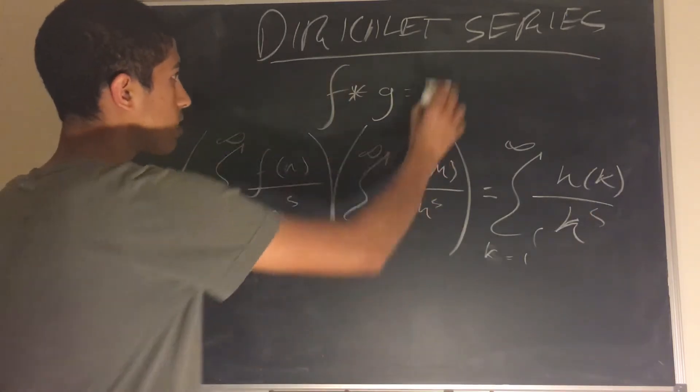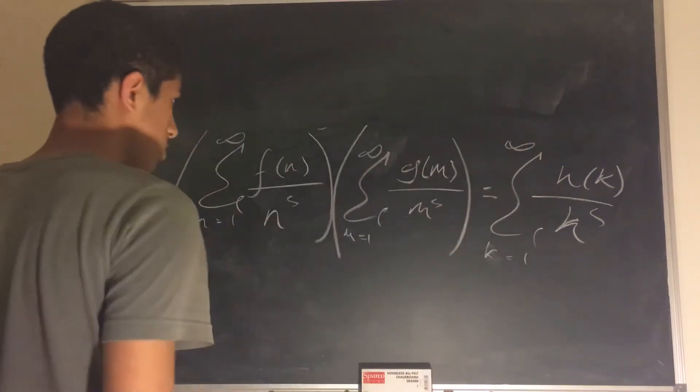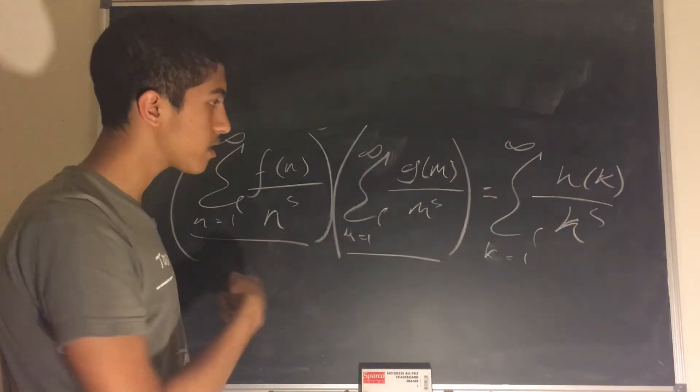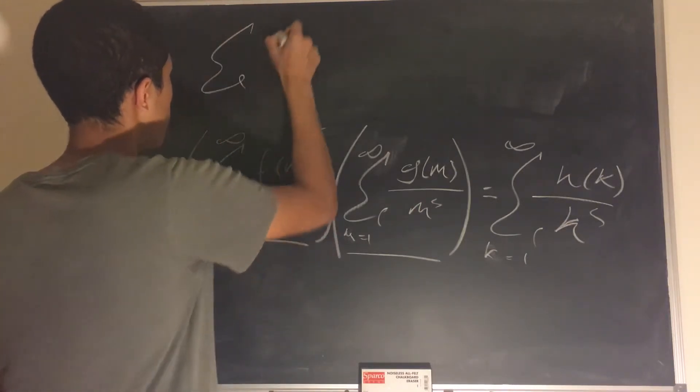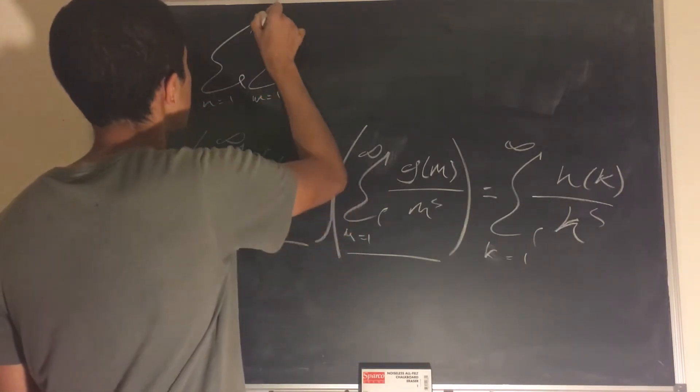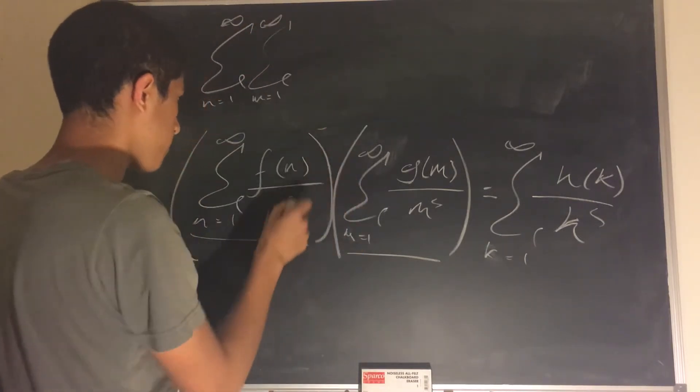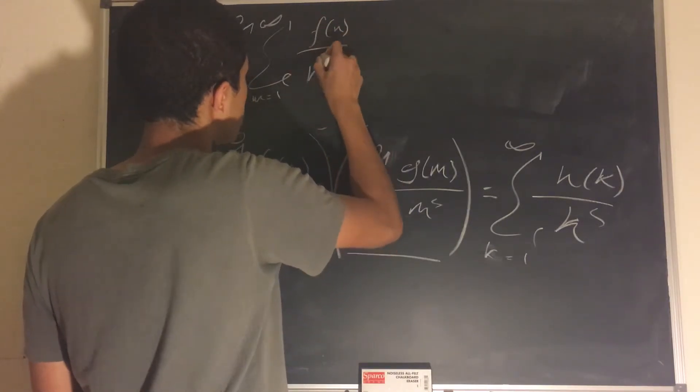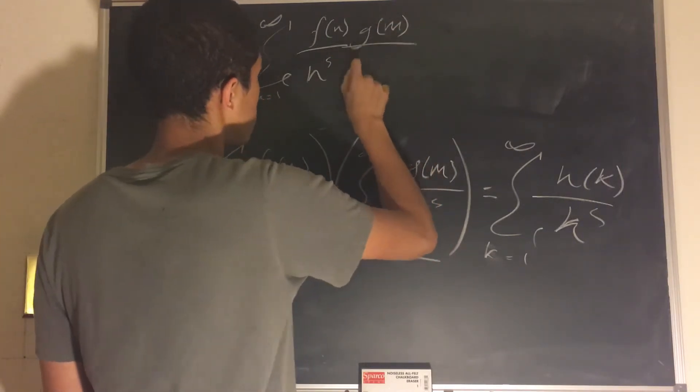So let's begin. So what happens when you have two sums and you're multiplying them together? Well, we can always condense this into a double sum. So then we have the double sum, n equals 1, m equals 1 to infinity to infinity of f of n over n to the s times g of m over m to the s.